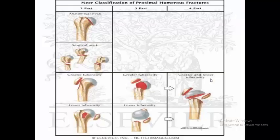In the two-part fracture: the first category is the anatomical neck and humerus; the second is surgical neck and humerus; the third is only greater tuberosity fracture; and the fourth is only lesser tuberosity fracture. In the three-part fracture, the greater tuberosity and lesser tuberosity are involved. In the four-part fracture, you can see all four bones: the head, greater tuberosity, lesser tuberosity, and the shaft.